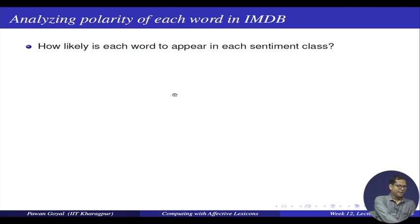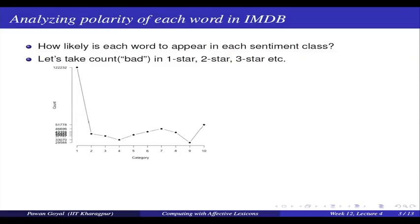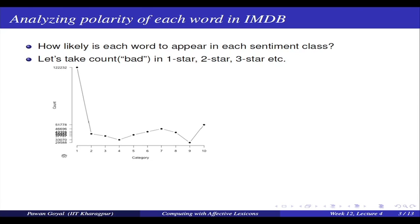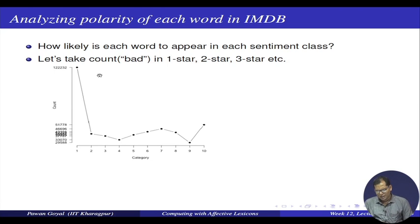Taking the IMDB example, I want to analyze the polarity of each word — how often it occurs with different ratings. The simplest measure would be to count how many times a word occurs with each rating from one to ten. On the x-axis you see different ratings and on the y-axis the count. But this approach gives raw counts and does not provide a normalized picture.